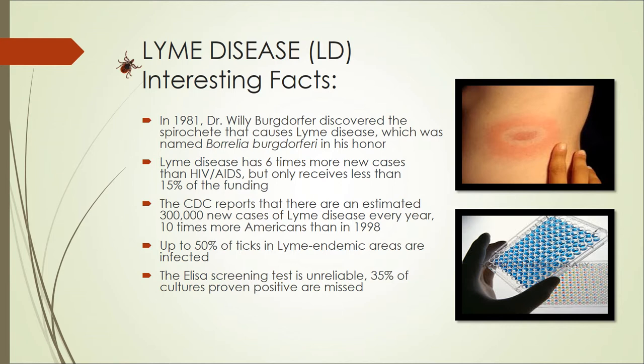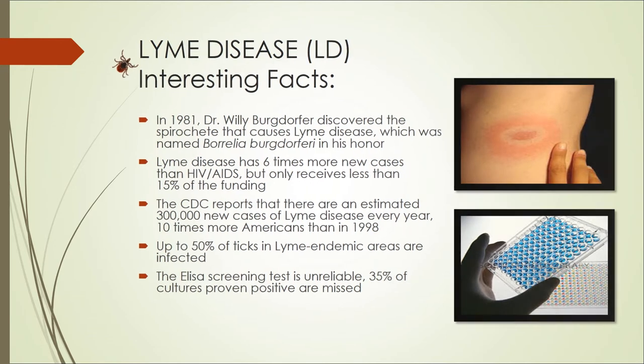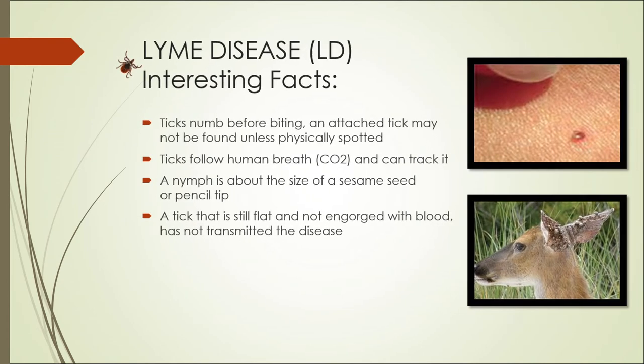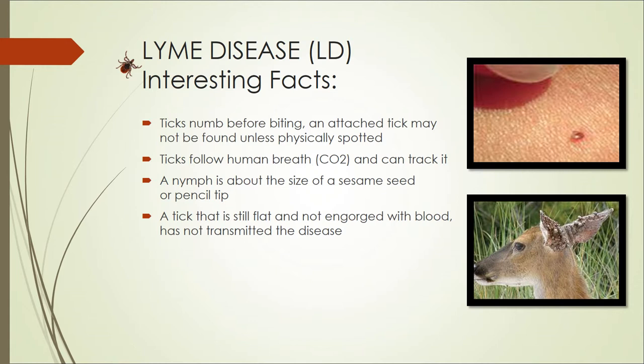Lyme disease infects approximately 300,000 people a year, 10 times more Americans than previously reported. Up to 50% of ticks in Lyme endemic areas are infected. The ELISA screening test is unreliable — it misses 35% of culture-proven Lyme disease cases. Ticks numb you before biting, so you may not find one unless someone else sees it. Ticks follow your breath and can track you down. A nymph is about the size of a sesame seed or pencil tip. When you find a tick that is still flat and tiny and not engorged with blood, it has not yet transmitted Lyme disease.